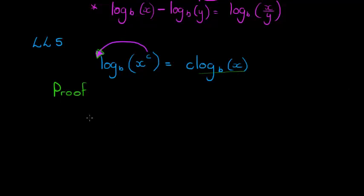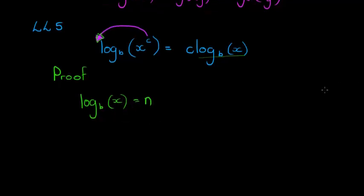If I take log base b of x and ask: what exponent must I give b to get x? The answer is some value n. So in exponential form: b to the power of n equals x. Now what about x to the power of c?